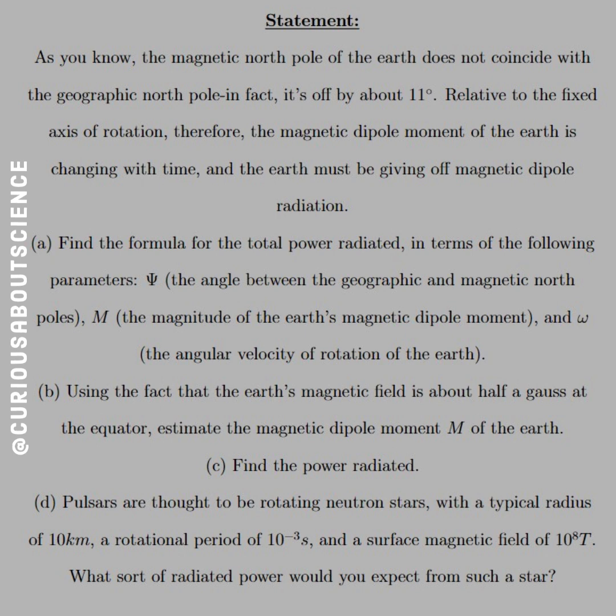And Part D: Pulsars are thought to be rotating neutron stars with a typical radius of about 10 kilometers, a rotational period of about 10 to the negative 3 seconds, and a surface magnetic field of 10 to the 8 Tesla. That is outrageously powerful.